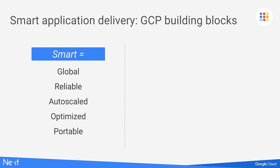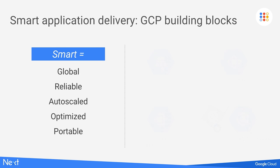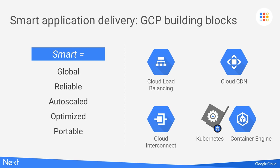Let's start with smart application delivery. What smarts do our customers ask us for? They say: deliver services close to users across the globe, help deliver reliable services with five nines of availability, scale services up or down in line with traffic, optimize for latency and costs, and enable delivery across GCP, on-prem, and clouds. That is what smart application delivery is about — global, reliable, auto-scaled, optimized, and portable. There are five key building blocks: Cloud Load Balancing, Cloud CDN, Cloud Interconnect, Kubernetes, and Container Engine.